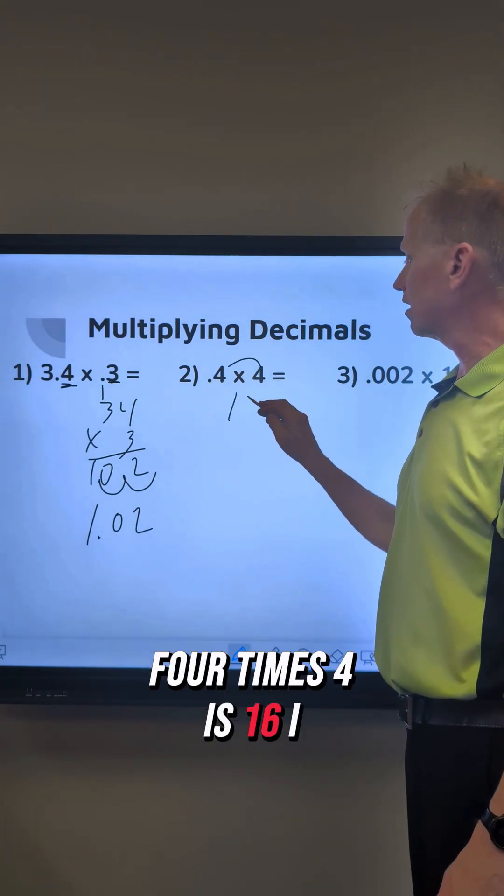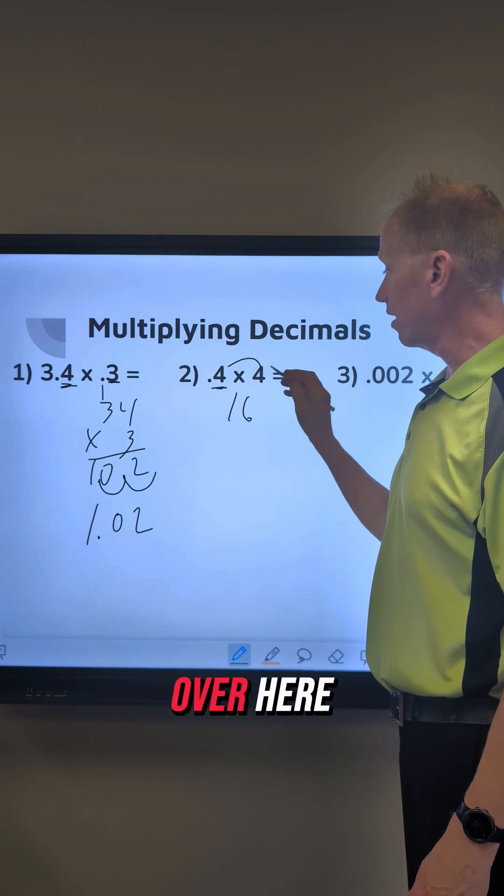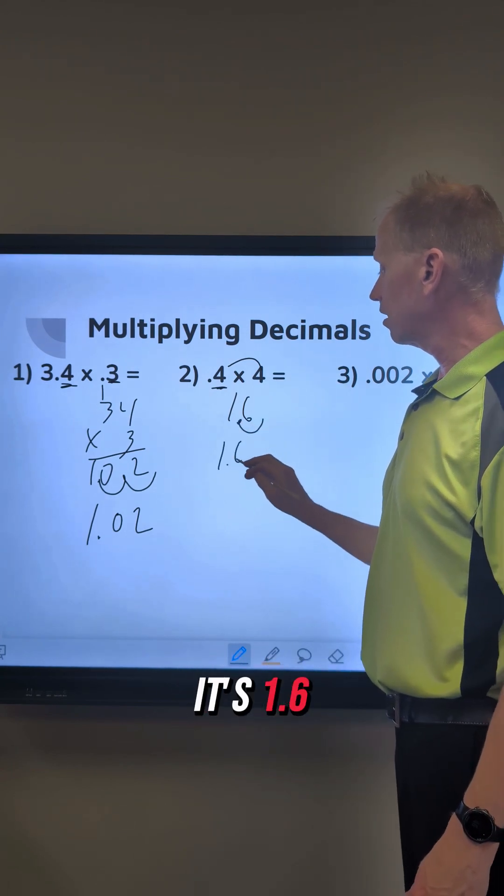Number 2, 4 times 4 is 16. I move the decimal once because there's nothing to the right over here. So I go 1 over and it's 1.6.